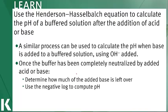Sometimes we add a base to the solution. We're going to talk about how to calculate the pH of a buffered solution after the addition of a base — a very similar process to what we were just discussing. Here, instead of looking at the number of equivalents of acid that we're adding, we're using the number of moles of hydroxide or equivalents of base that we are adding. Once we have completely neutralized a buffered solution, the pH is going to change very, very quickly. We need to determine how much of the added base is left over and calculate our pH from that.